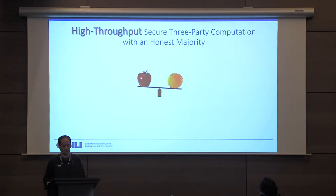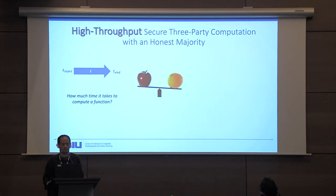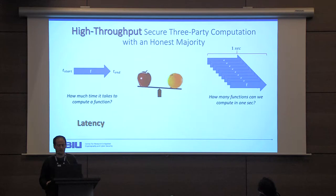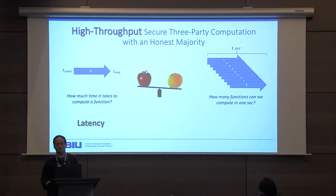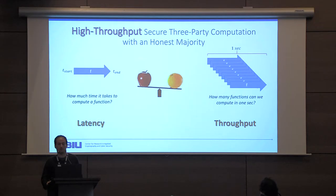A few words about what we mean by high-throughput secure party computation. In general, we have two ways to measure protocol performance. The first is how much time it takes to compute a single function — this is the latency of a protocol. The second is how many functions we can compute in a single unit of time, say one second — this is the throughput.